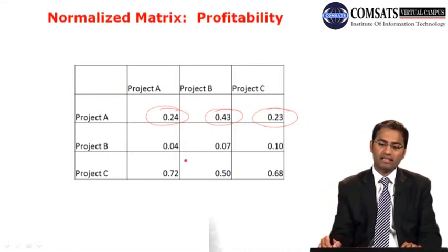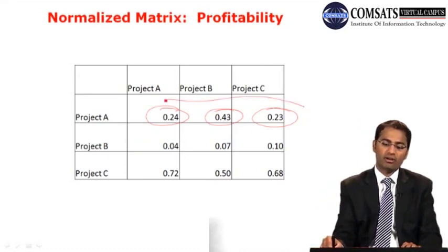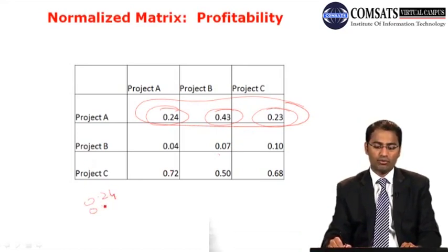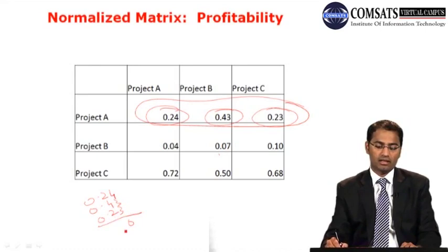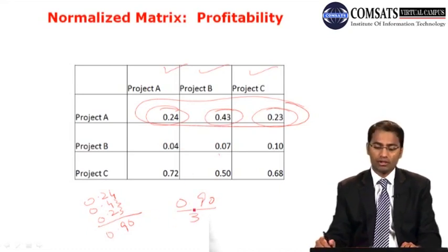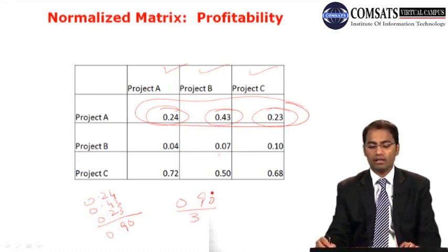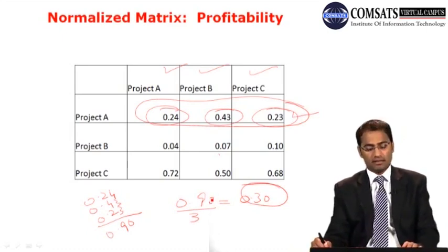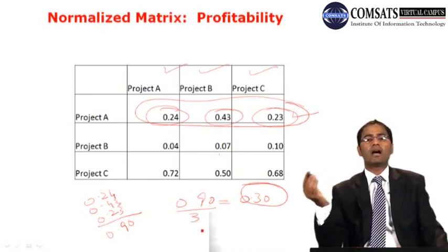Step four: calculate the priority vector by averaging each row of the normalized matrix. There are three values per row (three alternatives), so we sum the three row entries and divide by 3. The resulting priority vector for profitability is approximately: Project A = 0.298 (or 0.3), Project B = 0.069, Project C = 0.632. You can verify correctness because the values in the priority vector should sum to 1 (approximately 0.999).